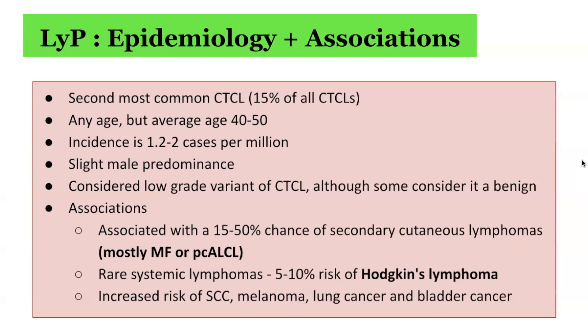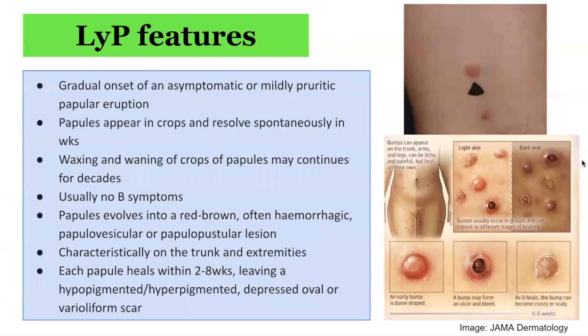In 5 to 10% of cases there is a risk of Hodgkin's lymphoma, and there are also reports of increased risk of squamous cell cancer, melanoma, lung cancer, and bladder cancer. Clinically, lymphomatoid papulosis is characterized by red-brown papules and nodules that develop central hemorrhage, necrosis, and crusting. They appear and then spontaneously disappear within a number of weeks, typically between 3 to 12 weeks.